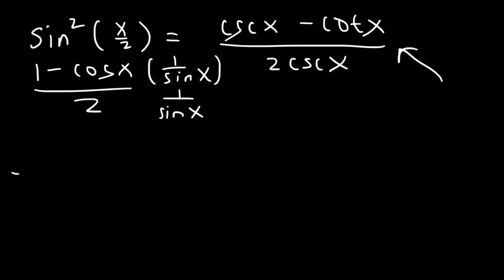And so we're going to get 1 over sine x. That's if you multiply these two. And then you have negative cosine divided by sine. And on the bottom, 2 times 1 over sine x.